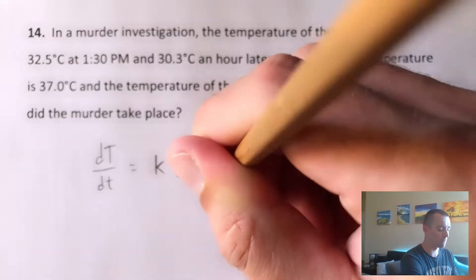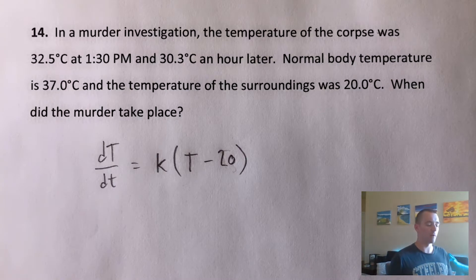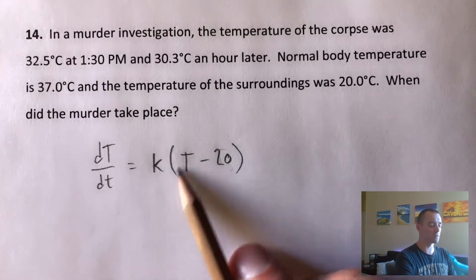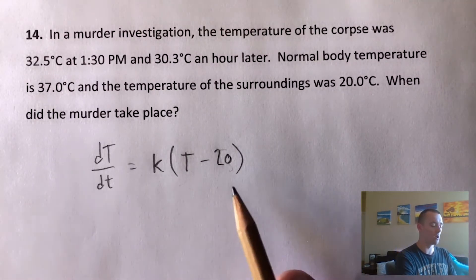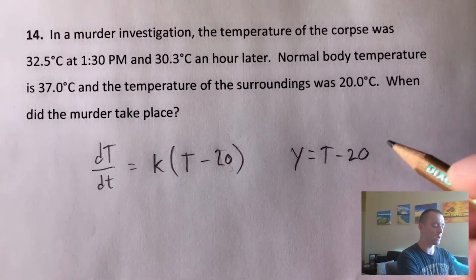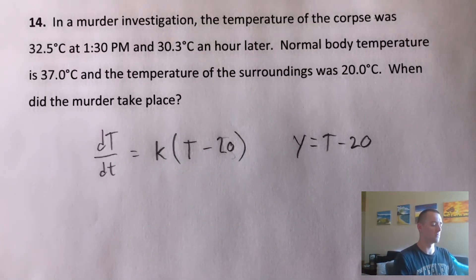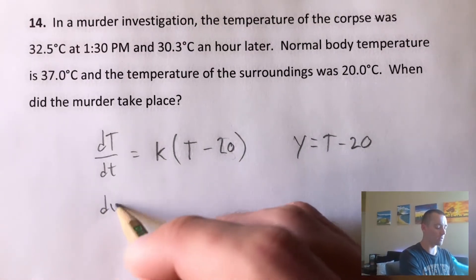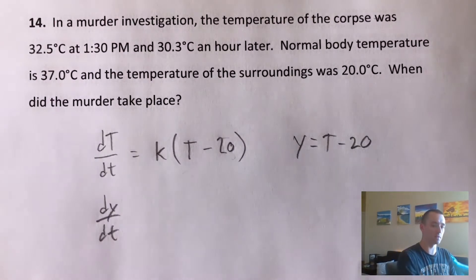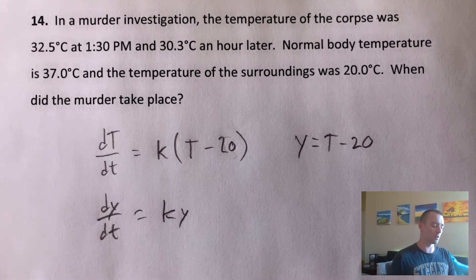Once we've done that, we want to do a substitution and introduce a new variable. Whatever's in the parentheses — T minus whatever number — we're going to call that Y. So we say Y equals T minus 20. That lets us rewrite this differential equation in simpler terms, replacing it with dY/dt equals K times Y.